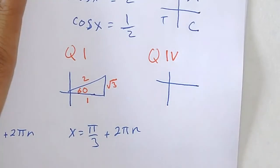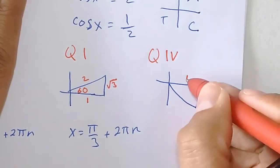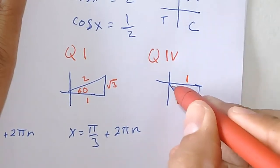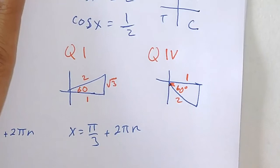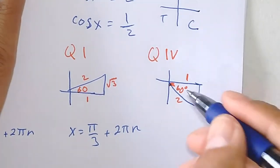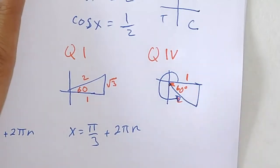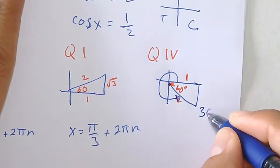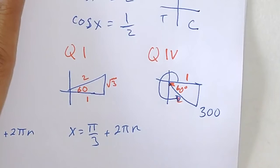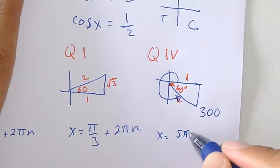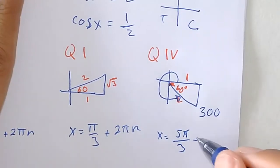For the angle in quadrant four, cosine is adjacent over hypotenuse. The actual angle I'm looking for is 300°. Converting 300° to radian measure gives 5π/3. Adding 2πn for all solutions: x = 5π/3 + 2πn. This only works when n is an integer, so make sure to include that.